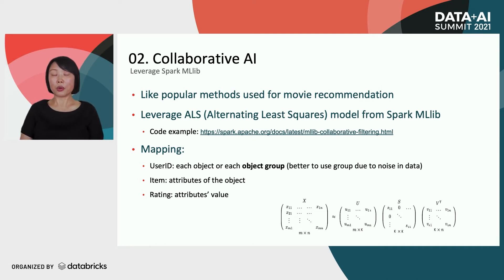Using that model, we have to map our data to the format required by the model inputs. The model has three columns you have to shape your data to: one is user ID, corresponding to object or object group ID; the item, which is where we map the attribute names; and the rating, where we convert attribute values as ratings. If you remember your linear algebra class, the fundamental for those recommender systems is singular value decomposition, which I illustrated conceptually on the bottom of this page.